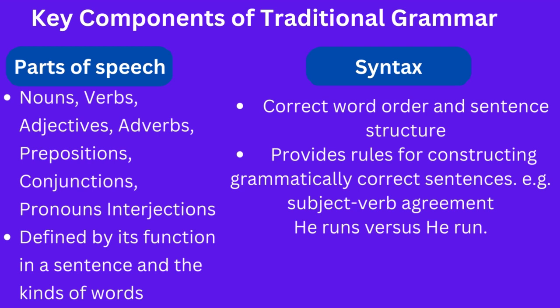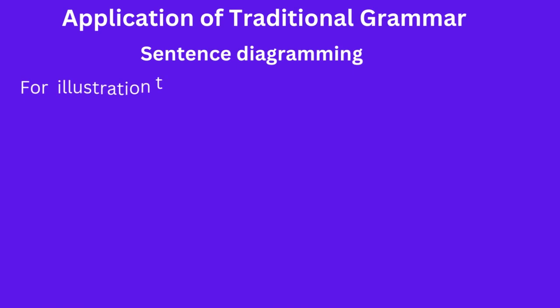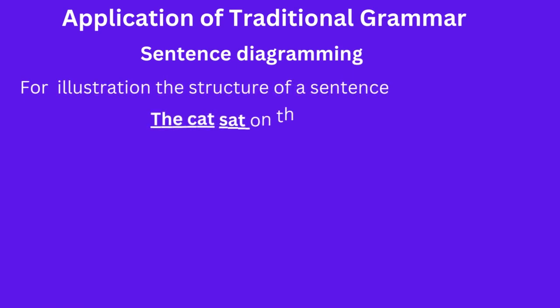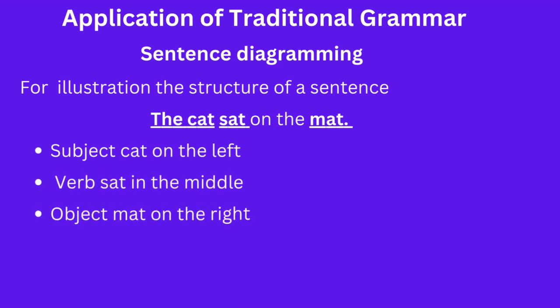Traditional grammar provides rules for using language correctly and avoiding common errors. For example, it emphasizes the importance of using proper spelling, using punctuation such as commas to separate items in a list, and using apostrophes to indicate possessive form.